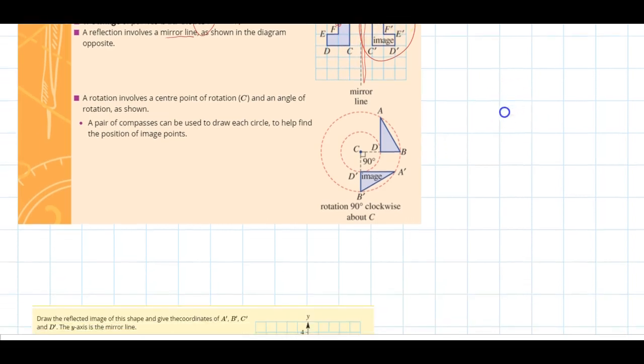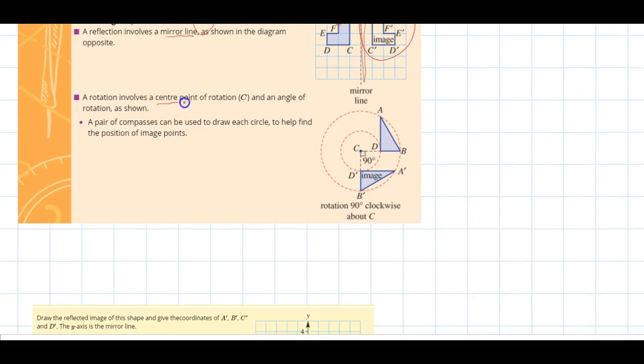Now rotation on the other hand involves a centre point of rotation which we usually refer to as C and an angle of rotation. We can use our compasses to draw these circles. We have our centre point C here and in this case we are going to draw this rotation 90 degrees clockwise.